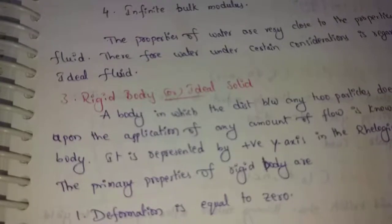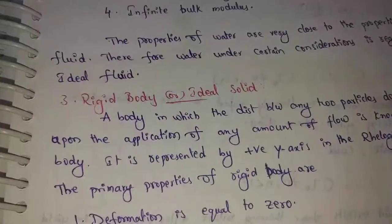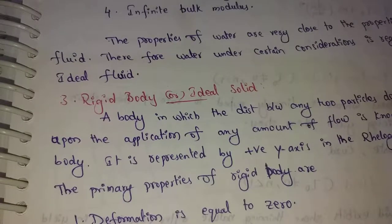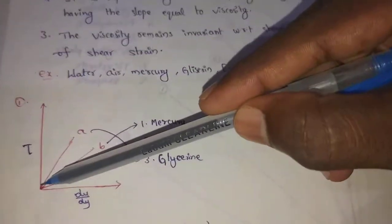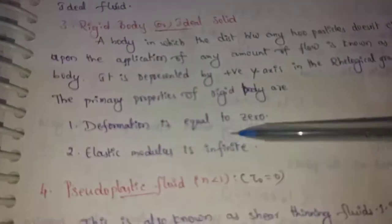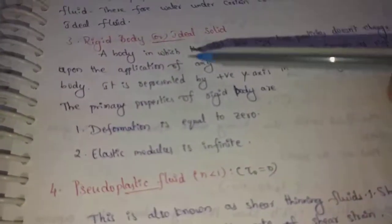Rigid Body and Ideal Solid are the same. In the diagram, the positive Y axis represents a Rigid Body. Here, deformation is equal to zero — that is, the elastic modulus is infinite.